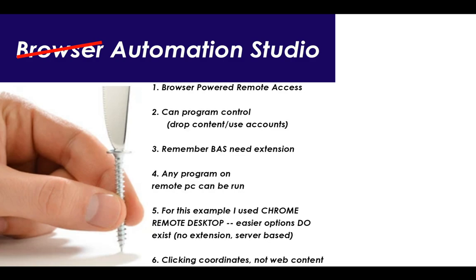Basically, what we're going to deal with today is utilizing a browser-based remote access service such as Chrome Remote Desktop. Browser Automation Studio can control that — it can control any program that resides on that remote access machine. It can take content that you feed into Browser Automation Studio and drop that content — reviews, web page content, a new blog post, whatever. It can use accounts, it can use proxies, as we saw in a previous video that was a good intro to Browser Automation Studio.